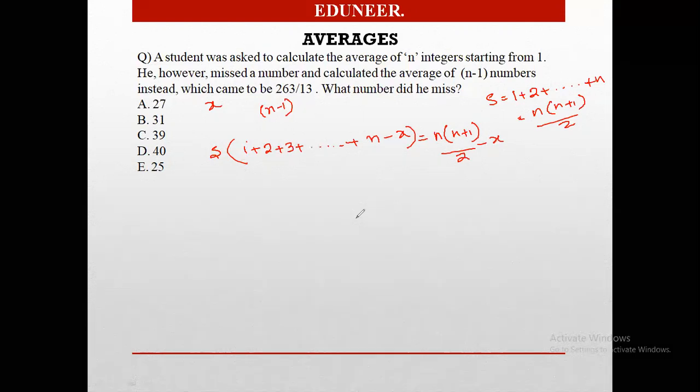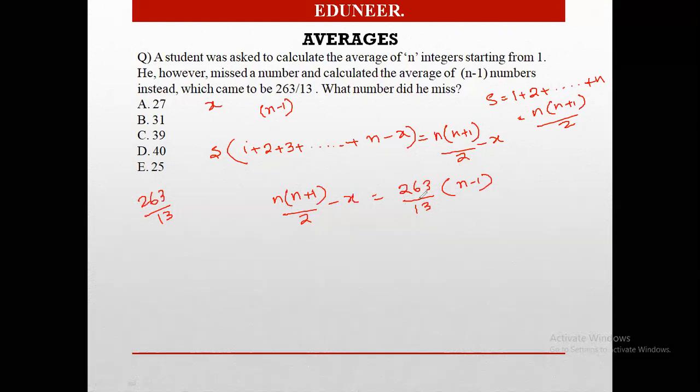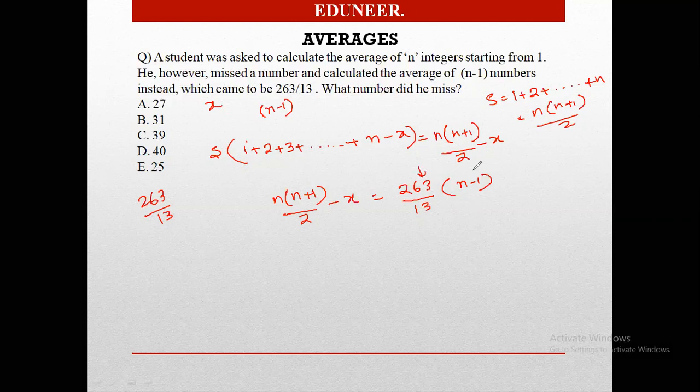Moving on, let us solve the rest of the data. Now it is said that the average is 263 by 13. The average of n minus 1 numbers is 263 by 13. So we have n into n plus 1 by 2 minus x equals 263 by 13 times n minus 1, because that is the average of n minus 1 numbers. So if you try to solve this, it becomes n square plus n minus 2x equals 526 by 13 n minus 526 by 13.